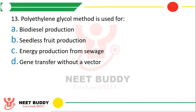Question 13: Polyethylene glycol method is used for? Options: Biodiesel production, seedless fruit production, energy production from sewage, or gene transfer without a vector.